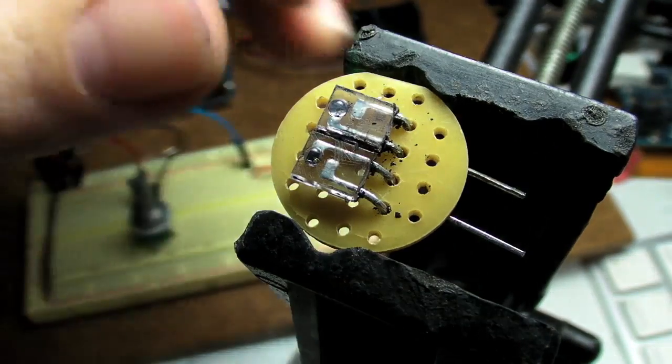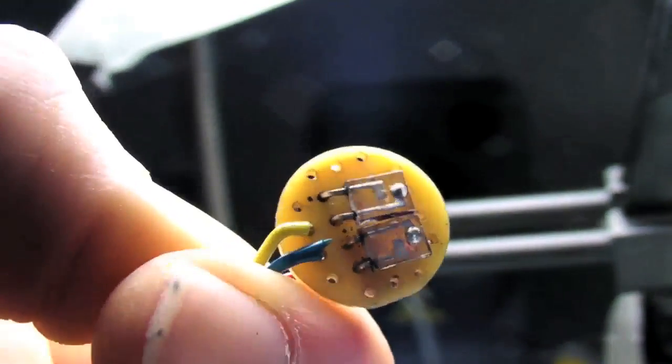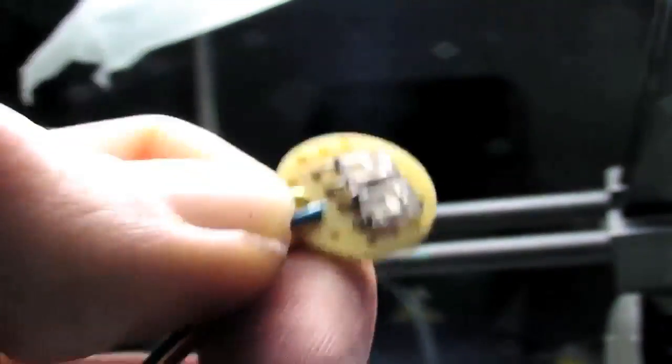I soldered the emitter, detector, and the two resistors to a small piece of perfboard along with the necessary connections to my Arduino's 5V ground and analog pins. I uploaded a program to the Arduino that sends readings from the phototransistor's output back to my laptop.